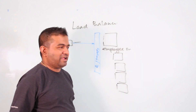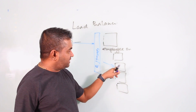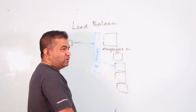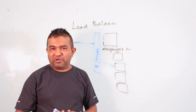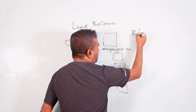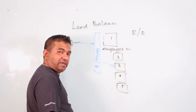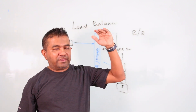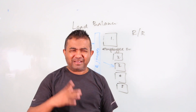One way is to distribute randomly — generate a number from one to five and send the request to that server. But this is not very effective because some servers get overloaded while others get no traffic at all. So randomly distributing the load is not a good option. A better approach is round robin — the first request goes to server one, second to server two, and so on, cycling through in order. That's a fair way to do it.